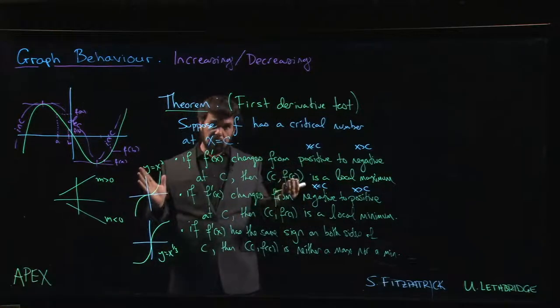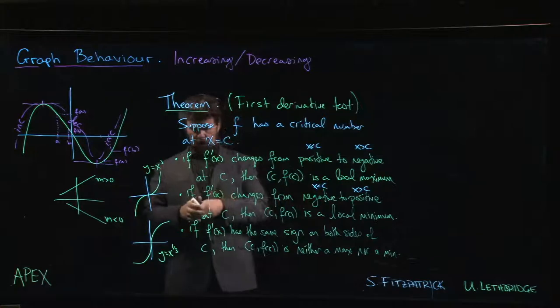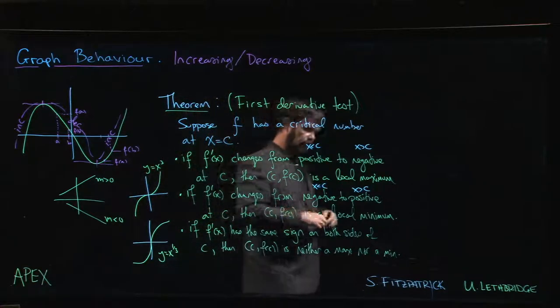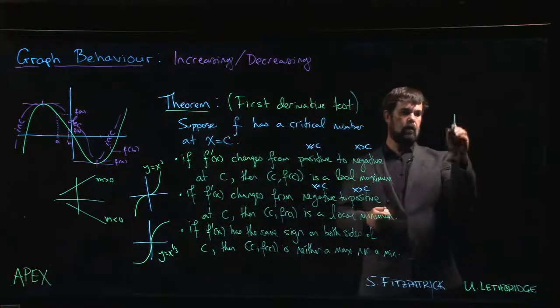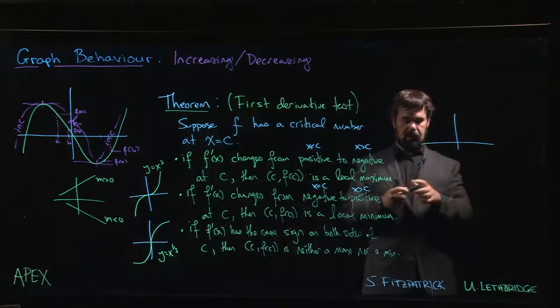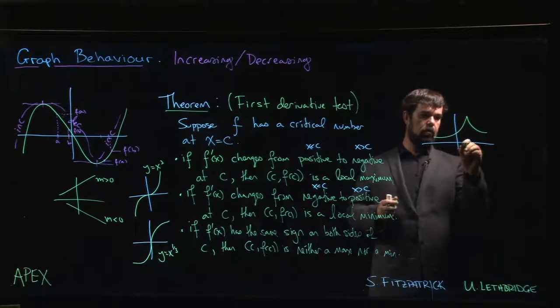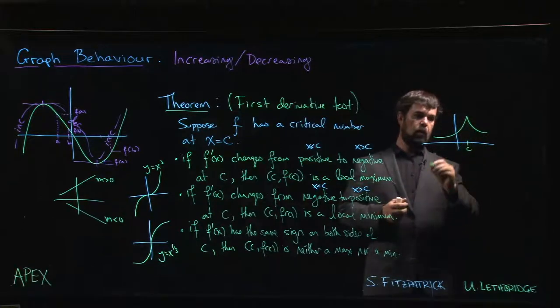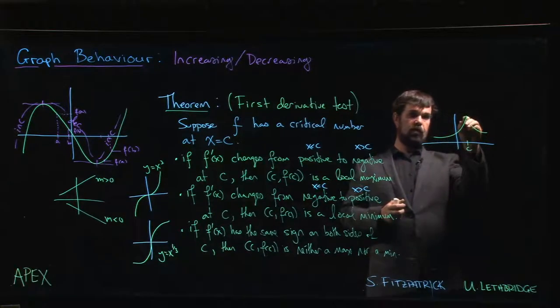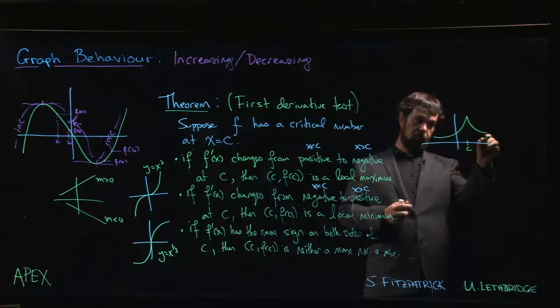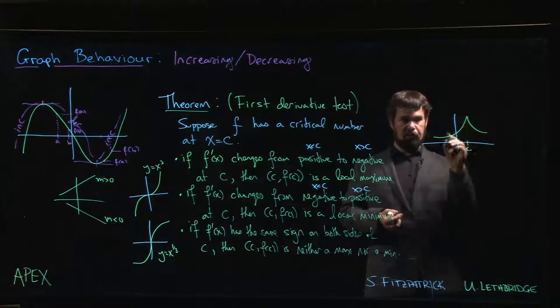If you had a graph with a cusp at C, the derivative is going to be positive on this side and negative on this side - undefined at the cusp, but still the derivative is changing from positive to negative, so you still have a maximum there.